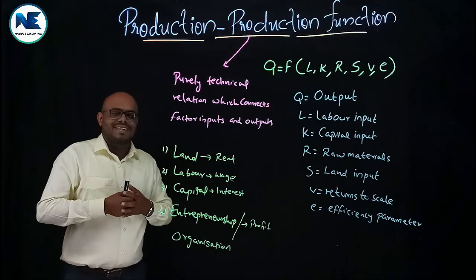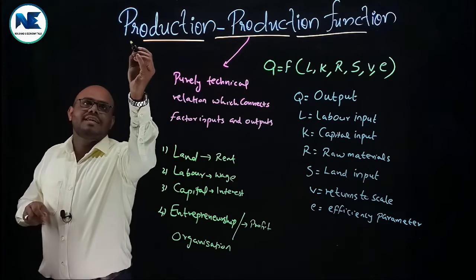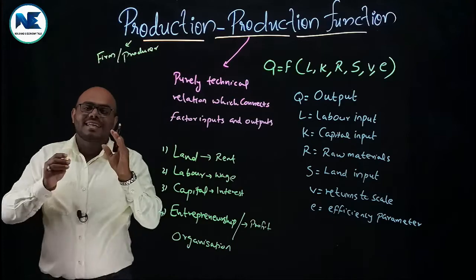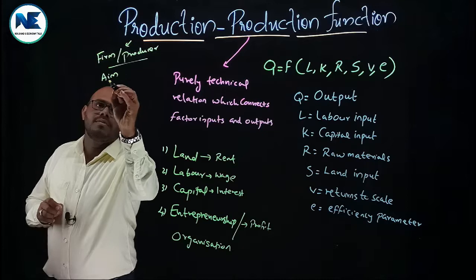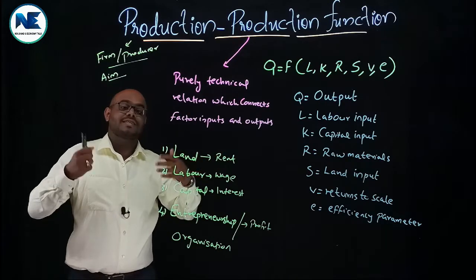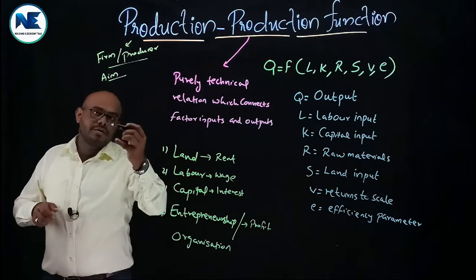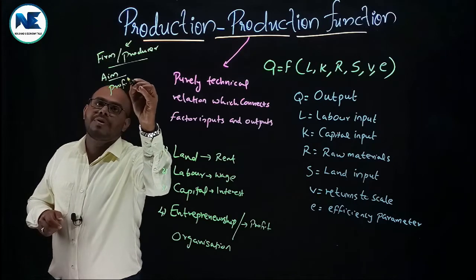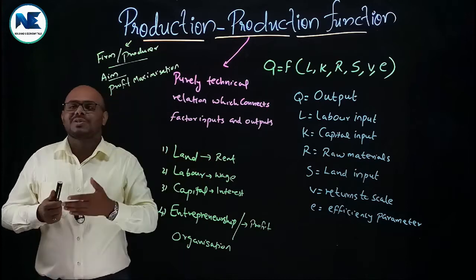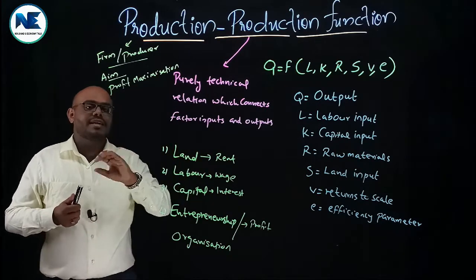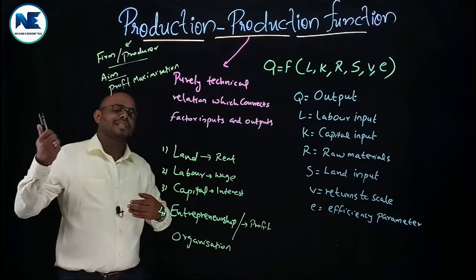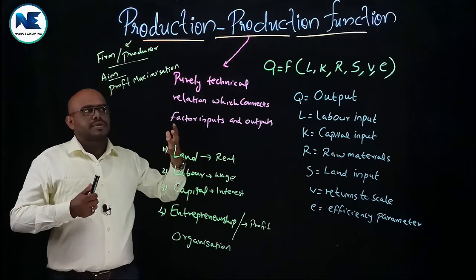Now what do we mean by production function? In production, we consider the perspective of a firm or producer. The aim of a consumer is utility maximization, but the aim of a firm or producer is profit maximization. In economics, we consider a rational entrepreneur or rational producer. The main aim of the producer is profit maximization, and sometimes we can say sales maximization.